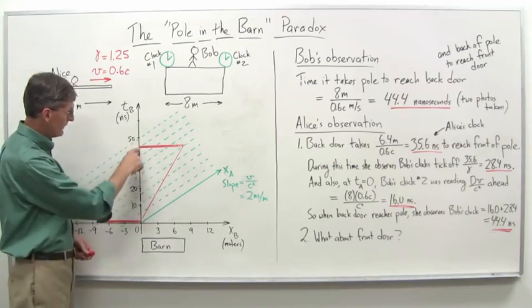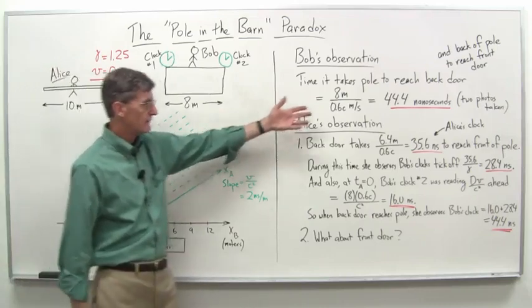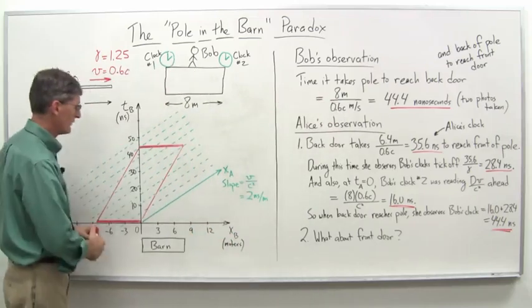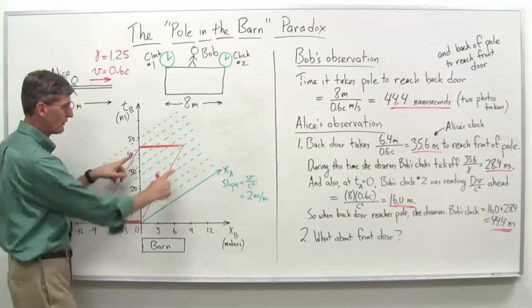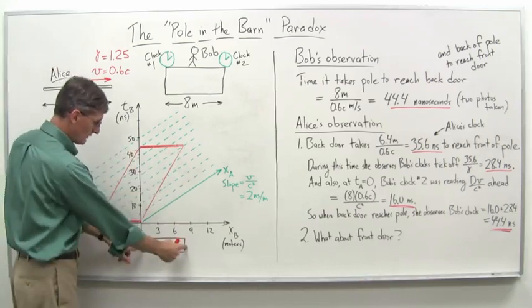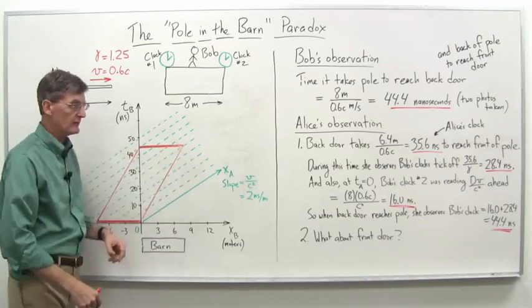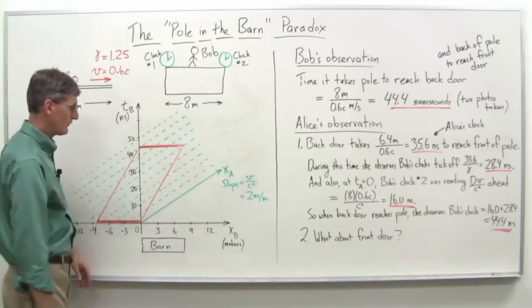And note, this is at about 44 nanoseconds, just as we had over here, 44.4 nanoseconds, is when the photographs were taken by Bob, so there's one clock at each end, one clock here and here, that take the photographs of each end, and get the 44.4 nanoseconds.